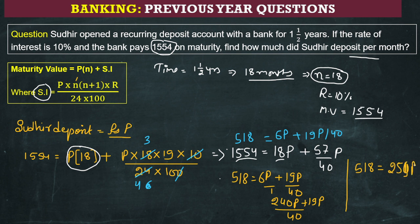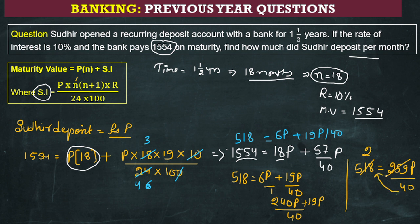So we have 259P divided by 40 equals 518. Both 518 and 259 are divisible by 2 — after dividing, we get 259P. Multiplying both sides, the final principal P comes out to 80 rupees. Hopefully this question is clear. Thank you.